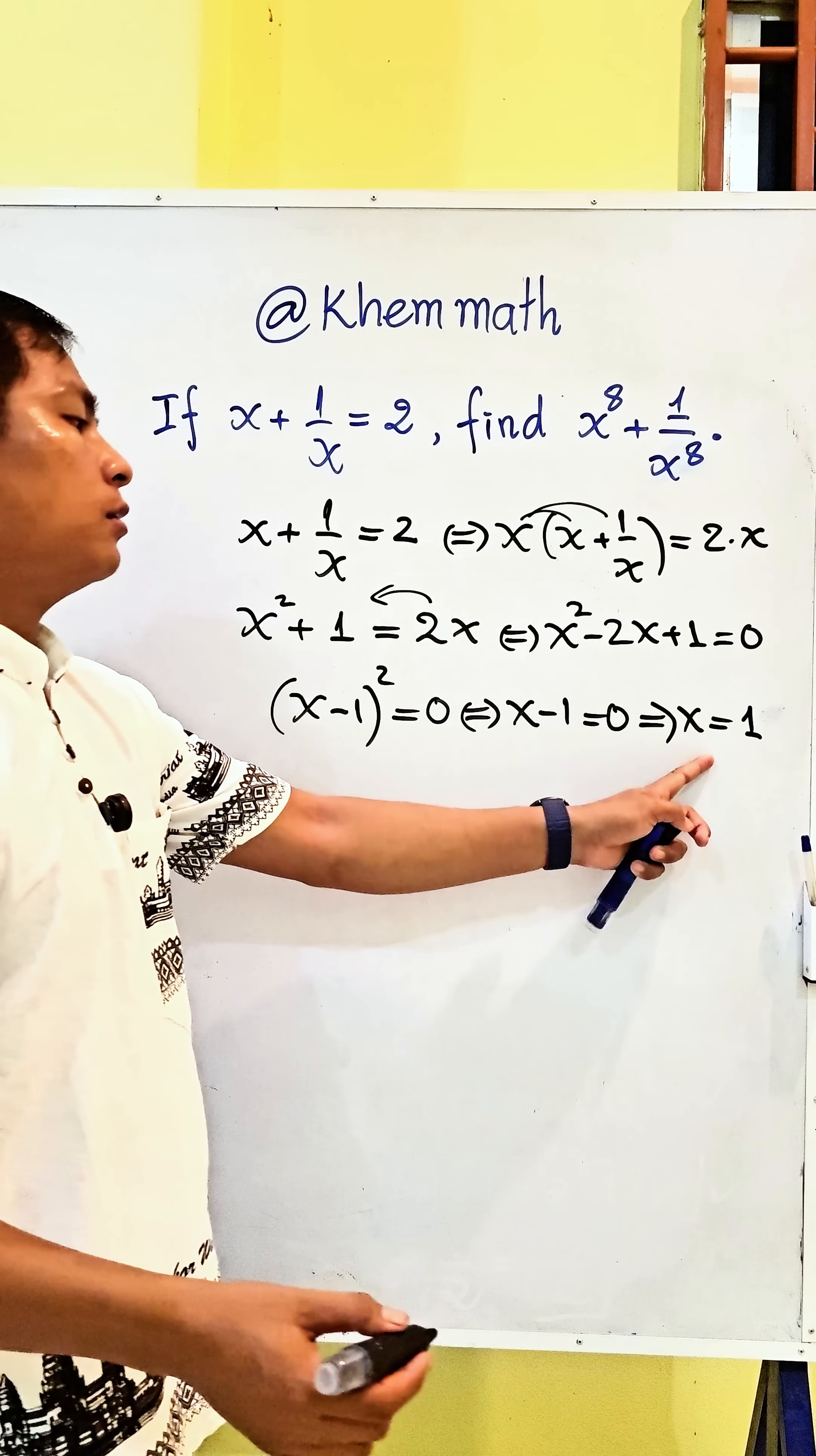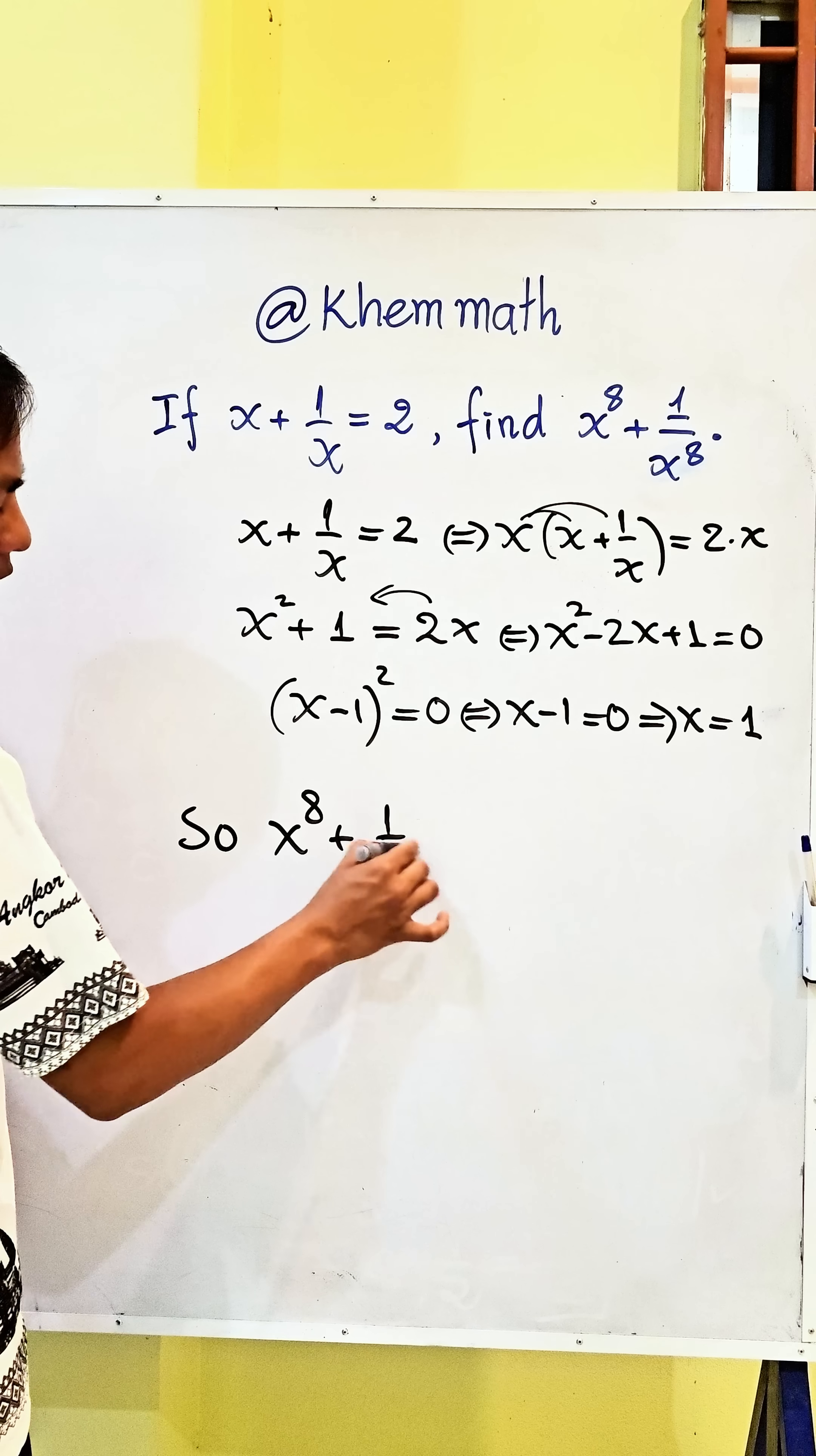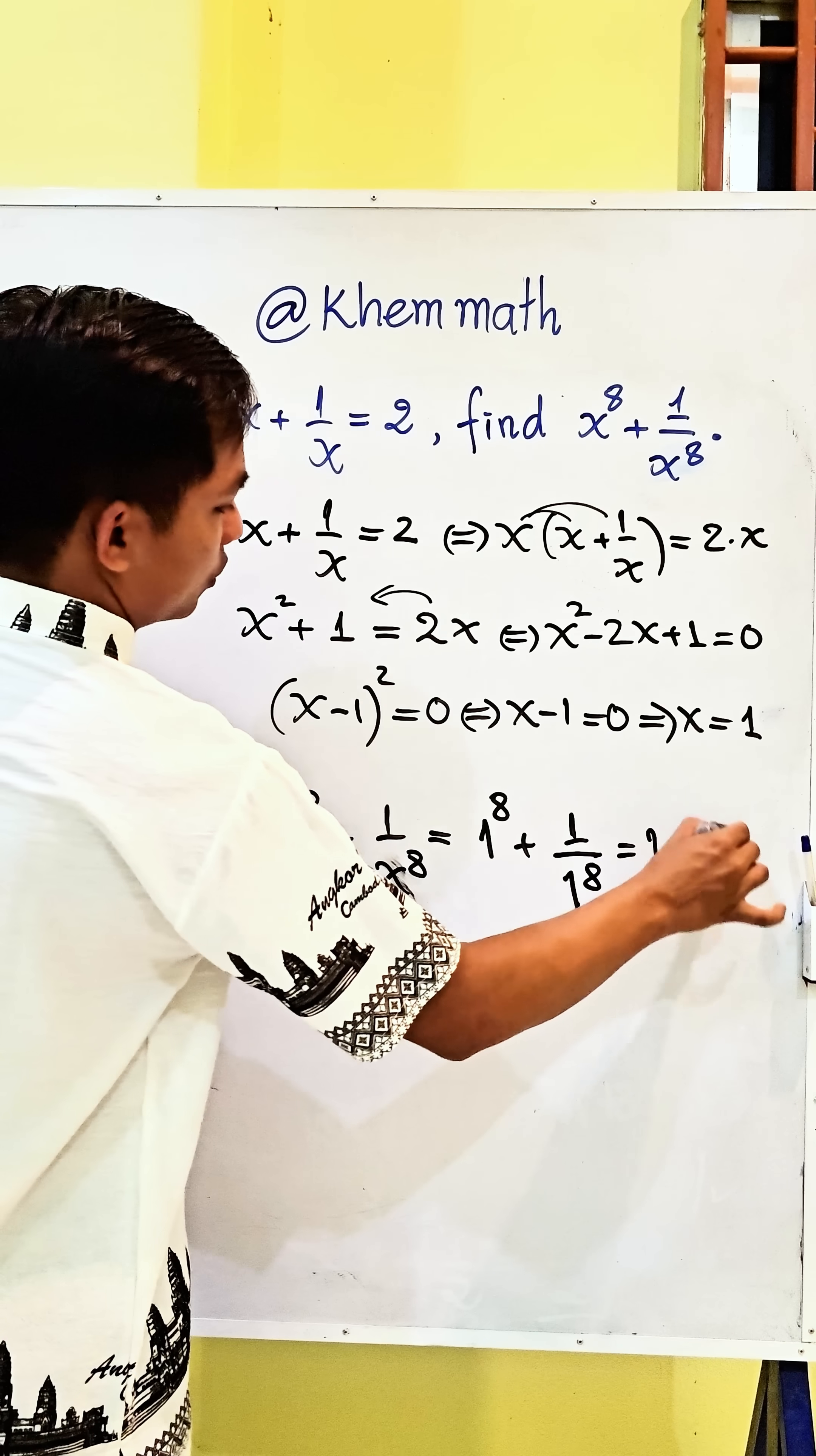So we take 1 to replace in this equation. So x power 8 plus 1 divided by x power 8 equals 1 power 8 plus 1 divided by 1 power 8, and plus 1 plus 1 equals 2. So the answer is 2.